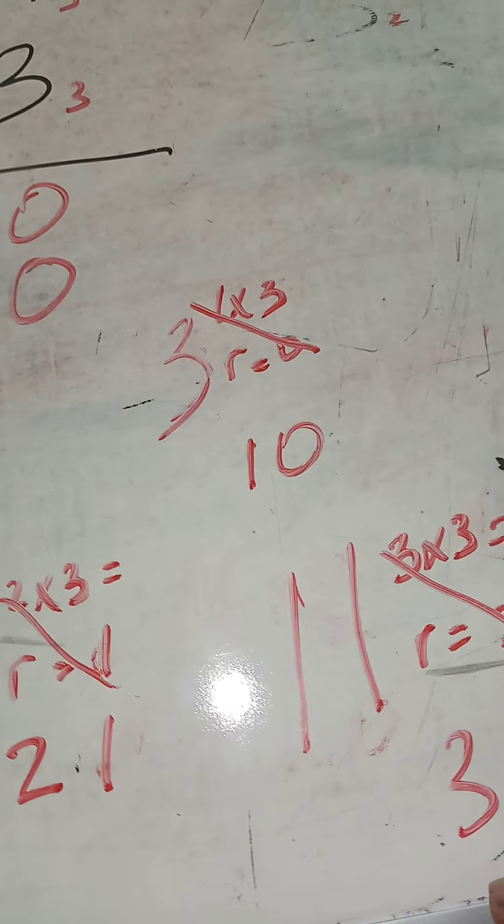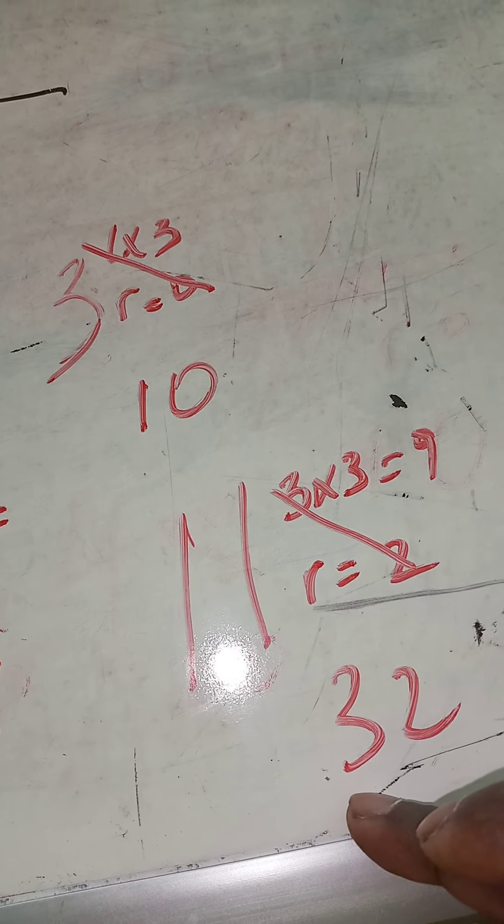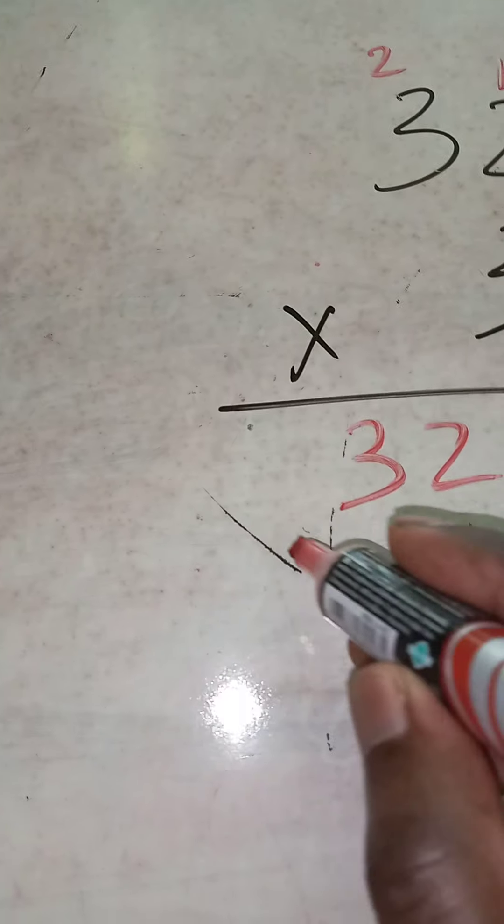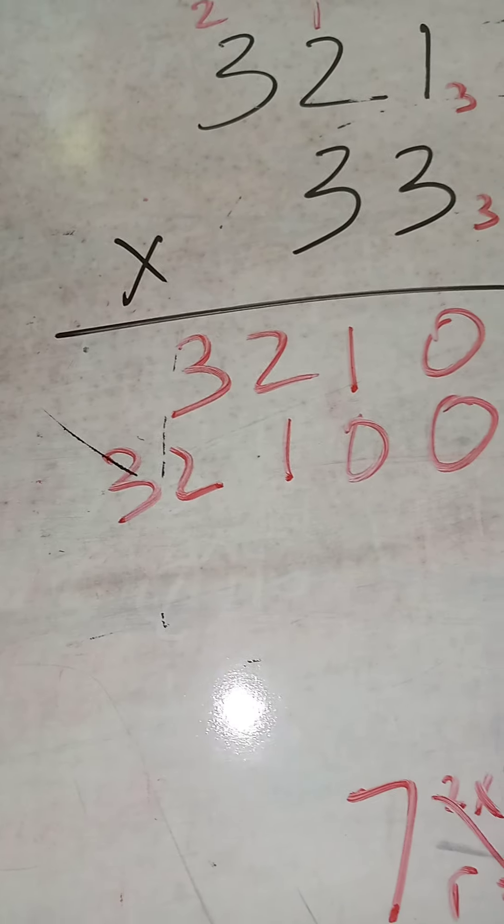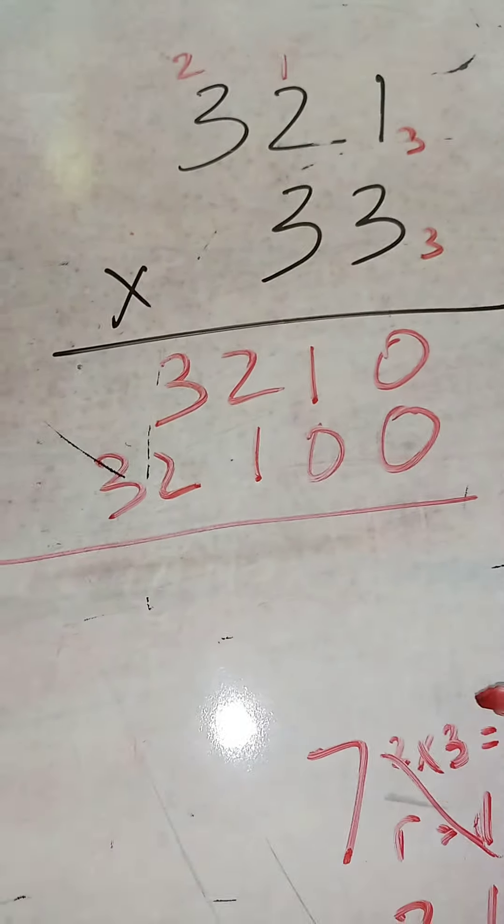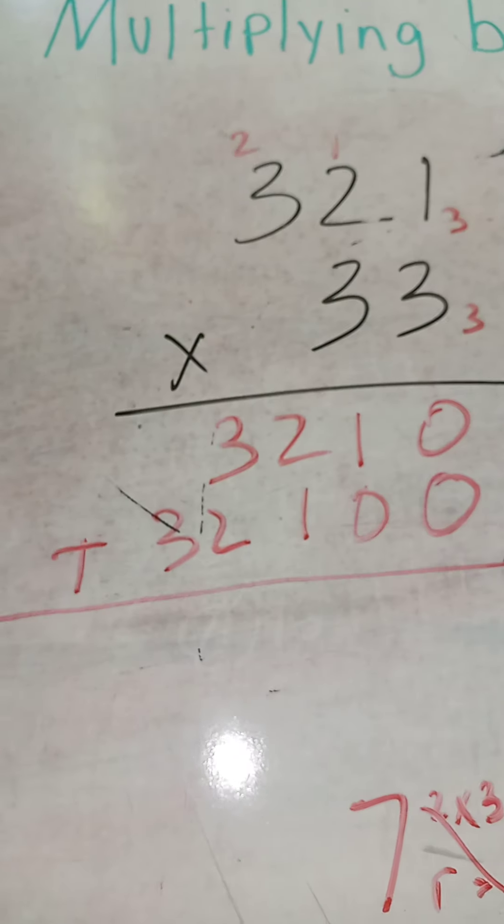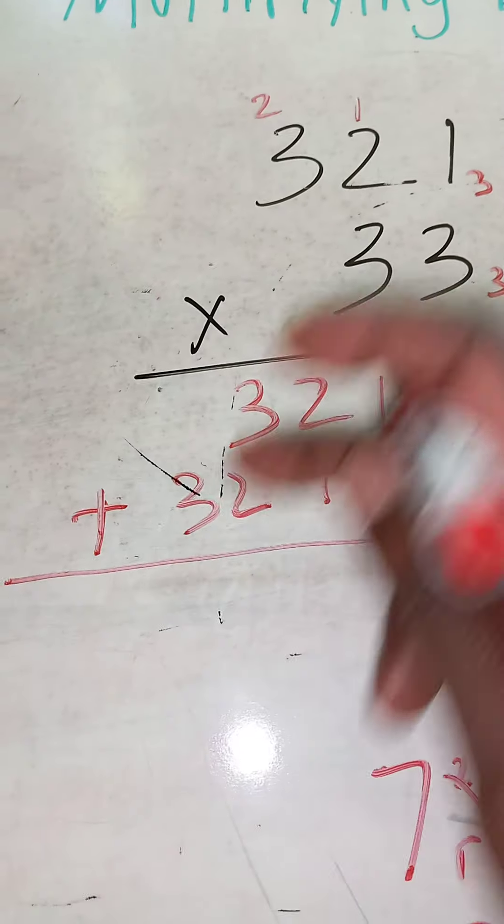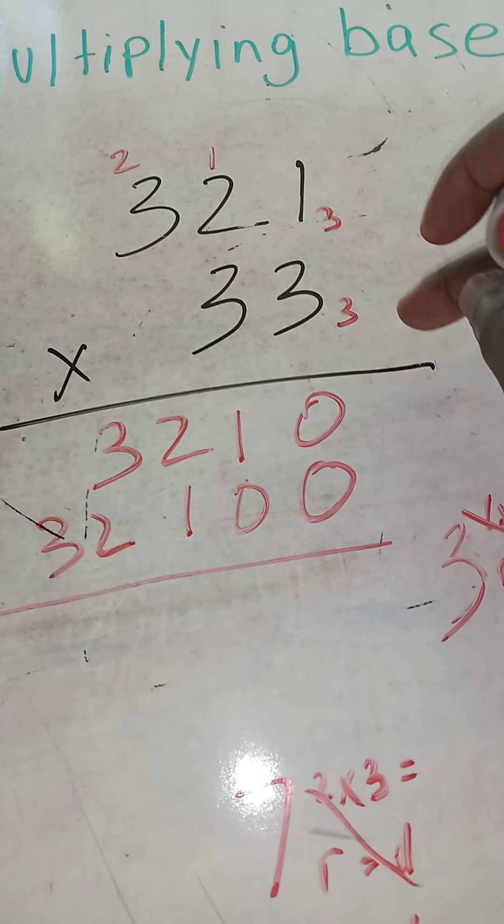3 times 3 is 9, 10, 11. Earlier we said 11 is written as 3-2, so put 3-2 right here. Then we draw our line and we're going to do addition. Remember to put your operation: we're multiplying here, we're adding here. Factor, factor equals product, partial product, partial product to get the final product.